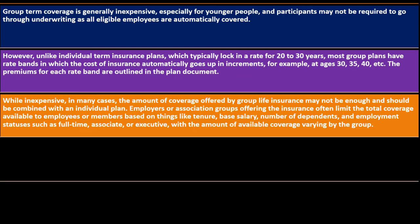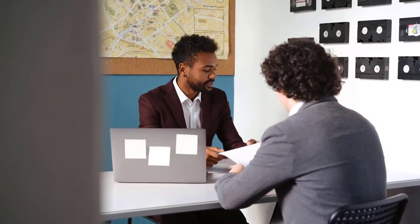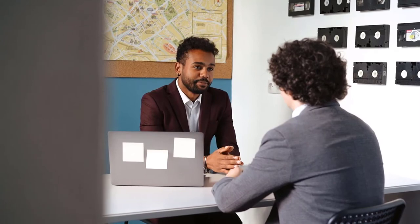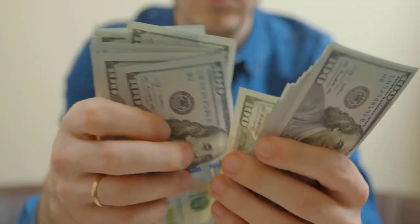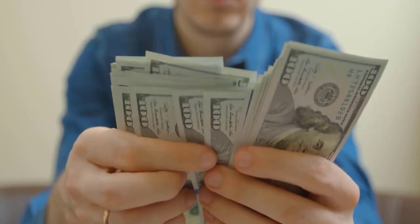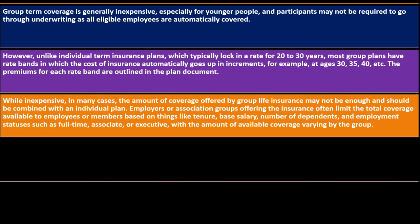While inexpensive, the amount of coverage offered by group life insurance may not be enough and should be combined with an individual plan. One annual salary might not be sufficient to pay a mortgage or meet the needs of a dependent family. Employers or association groups often limit total coverage based on tenure, base salary, number of dependents, and employment status — such as full-time, associate, or executive — with coverage amounts varying by group.